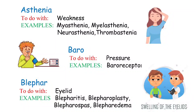The next term is 'blephar,' which means eyelid. Examples include blepharitis — inflammation of the eyelids; blepharoplasty — plastic surgery to correct eyelid defects; blepharospasm — eyelid muscle contraction; and blepharoedema — swelling of the eyelids. Whenever you hear 'blephar,' picture a boy with swollen eyelids.